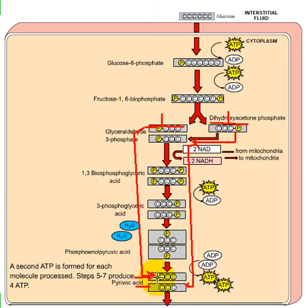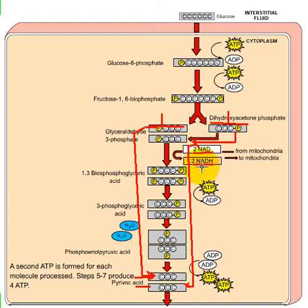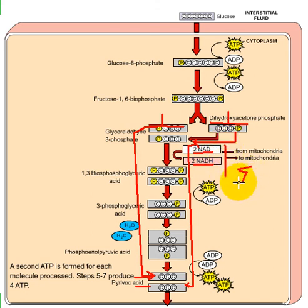In those steps, NAD is converted to NADH. Because we have two three-carbon molecules, two NAD are converted to NADH — one by each molecule. When the first molecule undergoes its conversion, one NAD is converted to NADH, and when the second molecule undergoes its conversion, another NAD is converted to NADH. So altogether, two NADH are produced.